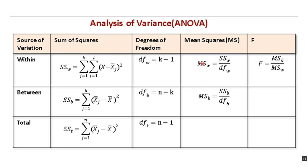Looking at the ANOVA table: the mean squares within is the sum of squares within divided by the degrees of freedom within, and the mean squares between is the sum of squares between divided by the degrees of freedom between. The F for this one-way ANOVA is the mean squares between — the effect — divided by the mean squares within — the error. We're hoping the effect is stronger than the error.